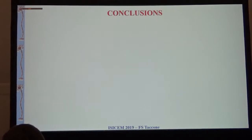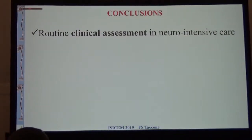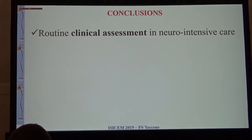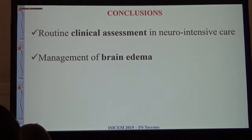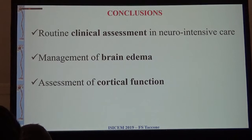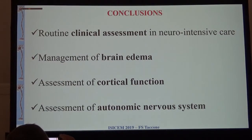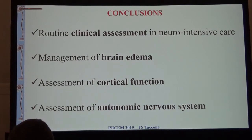Trying to conclude and leaving prognostication for tomorrow's talk: in patients with brain injury, pupilometry can probably replace our clinical assessment because it is more precise in assessing the light reflex and anisocoria. We can include pupilometry in multimodal monitoring in patients with brain edema to better understand brain tolerance to elevated ICP. It could be used to assess cortical function - we have preliminary data on the association with EEG, mainly the association with delirium - and it could be used as an indirect assessment of autonomic nervous system function. Thank you.